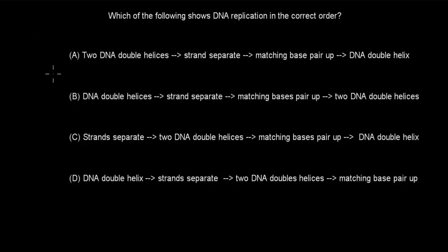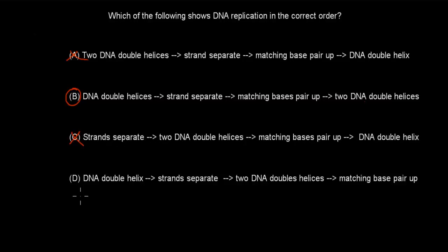Welcome back. The correct answer is B. First we have one DNA double helix, the strands separate, then the matching bases pair up, and at the end we have two DNA double helixes. A is false because it starts with two helixes. C is false because it starts with strands separating before we even have our DNA established. D is false because matching bases come at the end instead of in the middle. So B is correct.